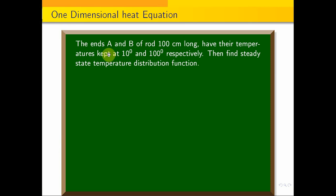The ends A and B of a rod 100 centimeters long have their temperatures kept at 10 degrees and 100 degrees respectively. Find the steady state temperature distribution function.